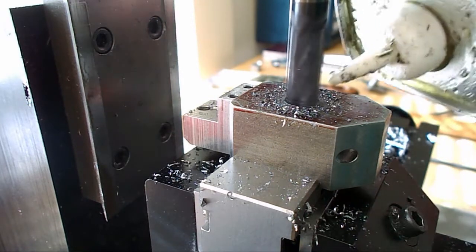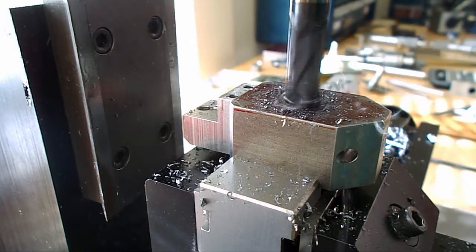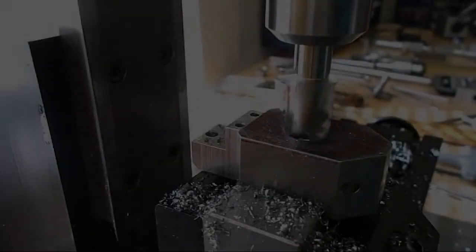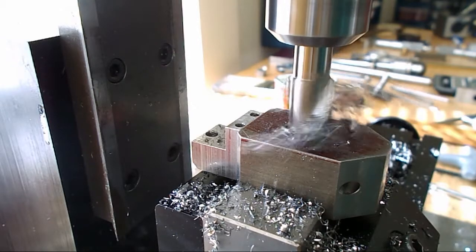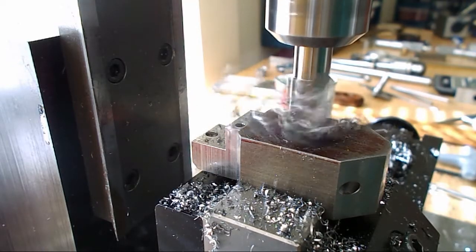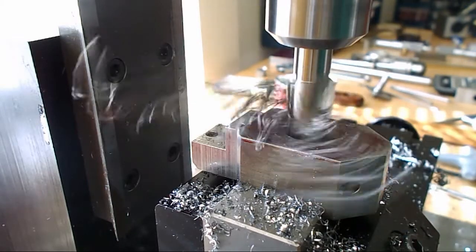So I just ease the end mill down through there. It actually cut pretty well. And then take it up to a half inch high speed steel end mill, and the shank size on this was 3/8 so it was able to fit into my end mill holder.